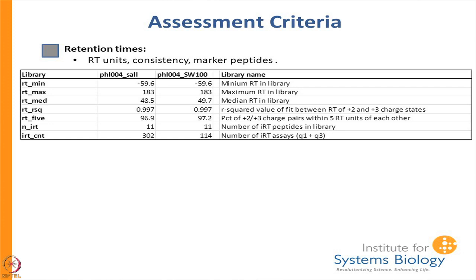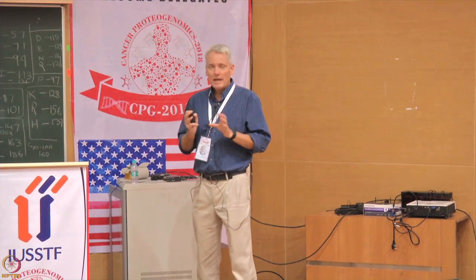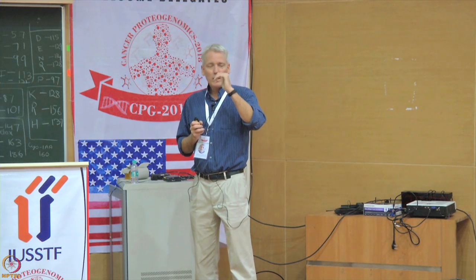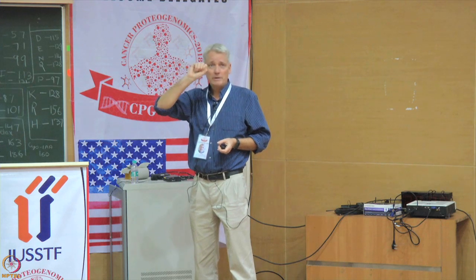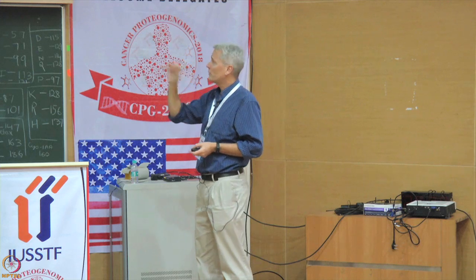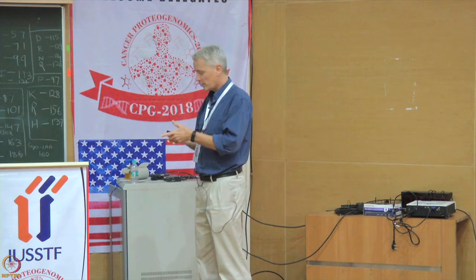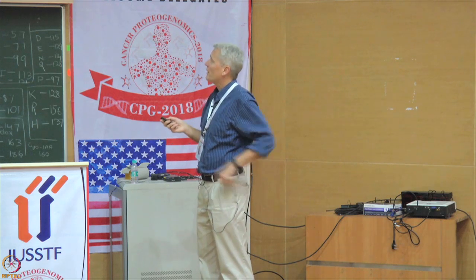There is also a measure of consistency. Sometimes you see multiple charge states of the same ion. When you make a spectral library, the software treats everything independently, so you end up with potentially different retention times for the plus 2 and plus 3 of the same peptide. That does not make sense — when your peptide is eluting, it is not like plus 3 elutes here and plus 2 elutes elsewhere. The peptide elutes, then ionization produces either a plus 2 or plus 3. So you would hope their retention times would be very close to each other, but it turns out they are not always.